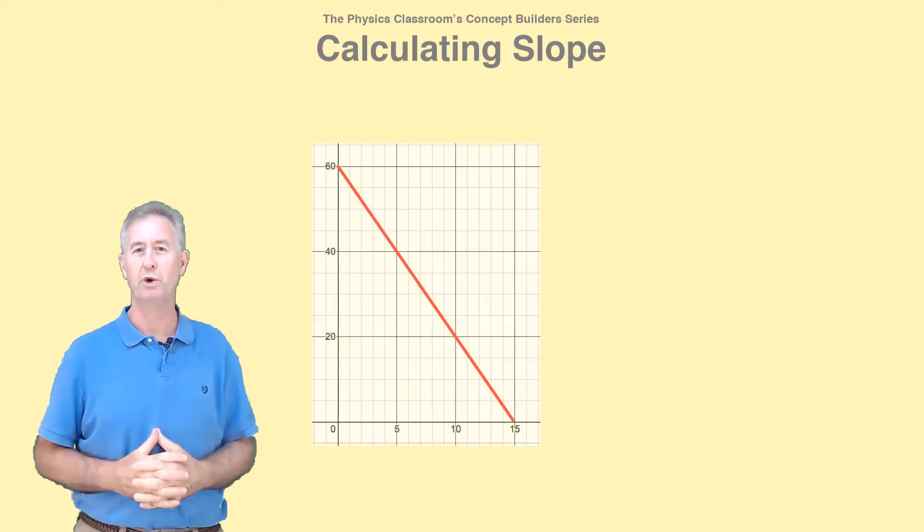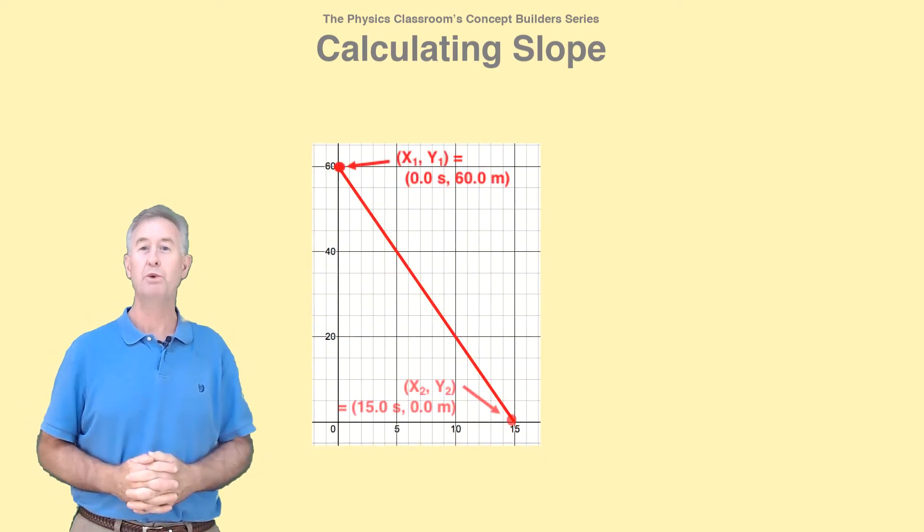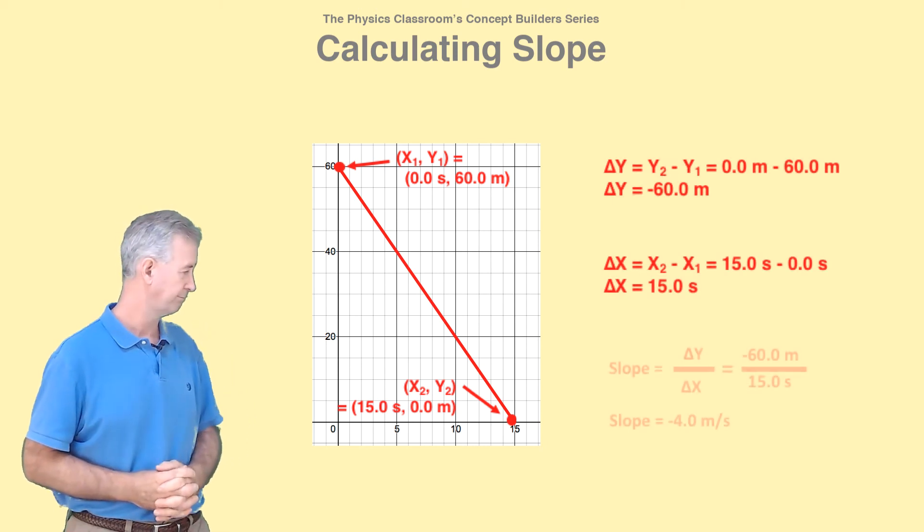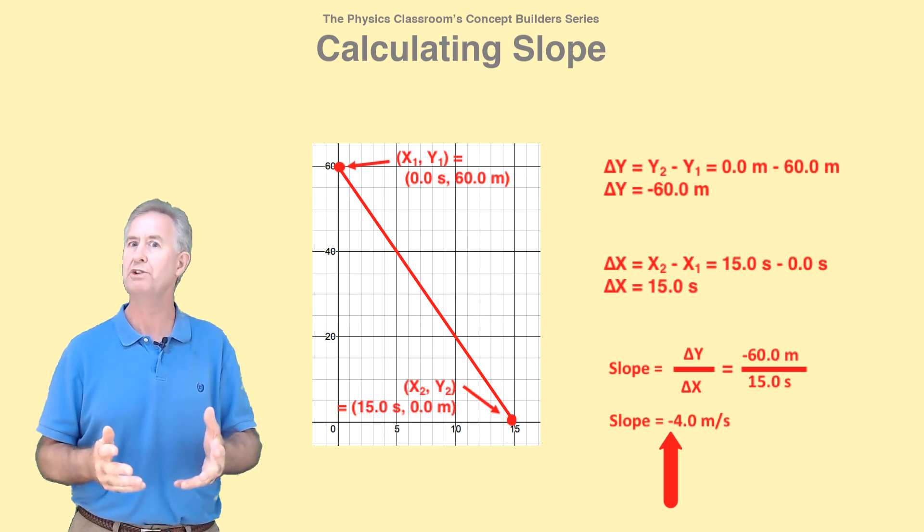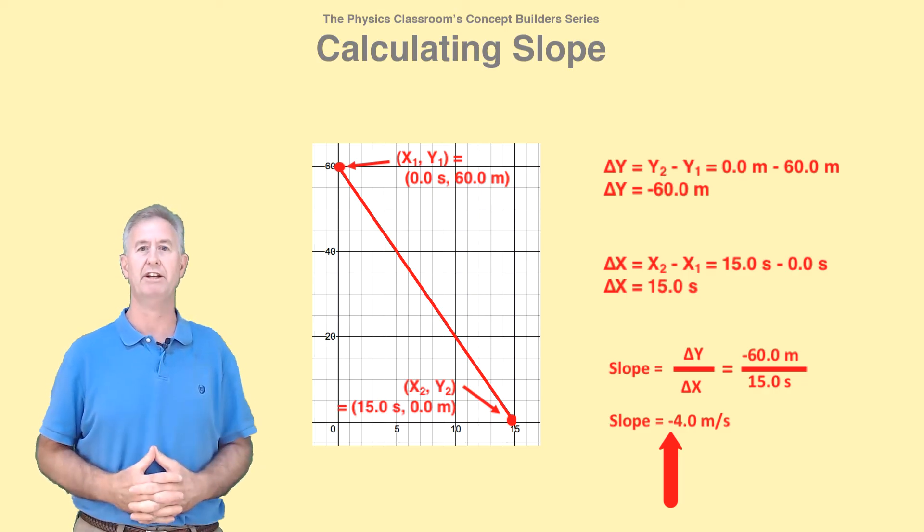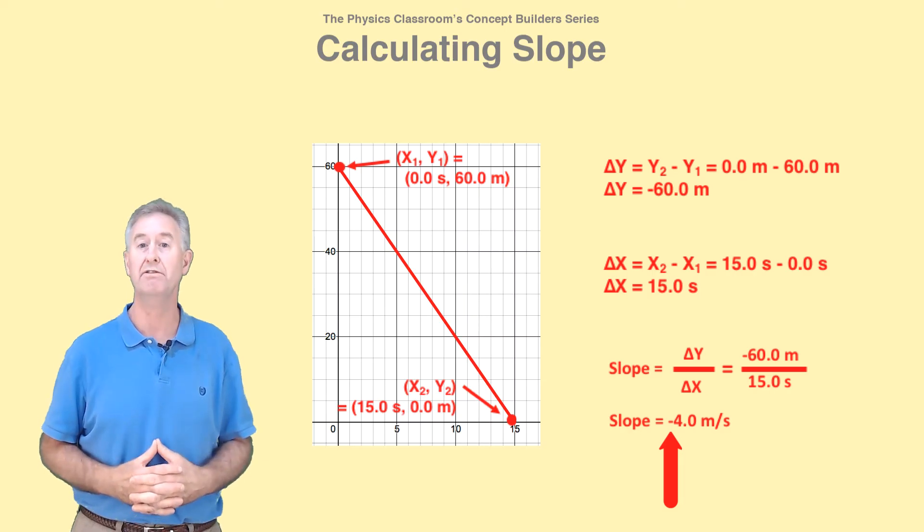Now the second warning has to do with downward sloping lines like this. When you do your math correctly, you end up with a negative slope value. Downward sloping lines will always have negative slope values. So if your work yields a positive value, something's wrong. Go back and check your work and fix it.